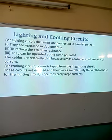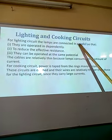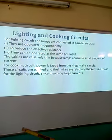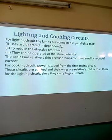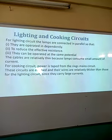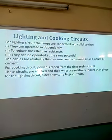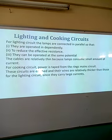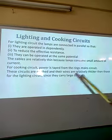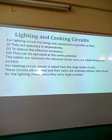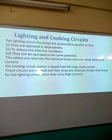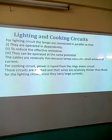To summarize the lighting and cooking circuits: for the lighting circuit, lamps are connected in parallel so they are operated independently, to reduce the effective total resistance in the circuit, and because they can be operated at the same potential. The cables are relatively thin because lamps consume a small amount of current. For the cooking circuit, power is normally tapped from the ring main circuit. These circuits are earthed and the wires are relatively thicker than those of the lighting circuit because they take a large amount of current.